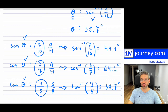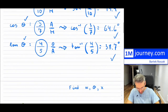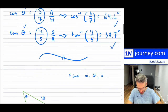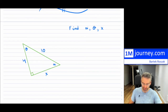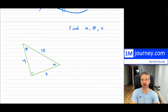Now you know how to use sine and sine inverse, and the same goes for cosine and tangent — you can use inverses to find angles whenever you don't have them. Here's another example: a triangle where they give us the hypotenuse of 10 and one side of 4, and they want us to find all angles — alpha and theta — and the remaining side.